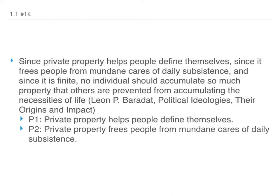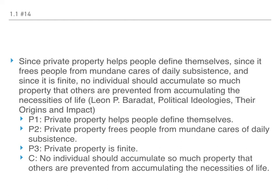And then of course there's another premise given by 'since' again — since it is finite, again filling in 'private property' for 'it.' Therefore the conclusion is: no individual should accumulate so much property that others are prevented from accumulating the necessities of life. That one was fairly straightforward because of all the 'since' indicators, though it may have been slightly confusing because there's nothing indicating the conclusion except the absence of premise indicators.